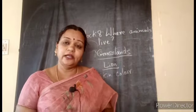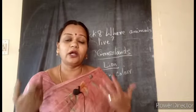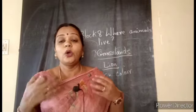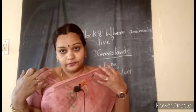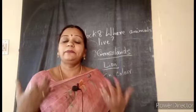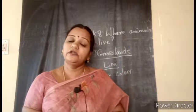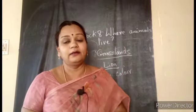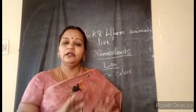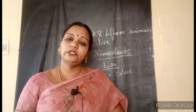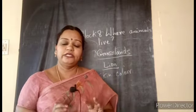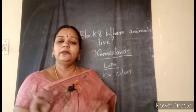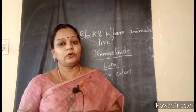Deer have long legs to run fast. The lion's skin color merges with the surrounding so it cannot be spotted easily — this helps the lion go close to the deer undetected, hunt, and get its food. Each animal has its own adaptation in physical features to survive.